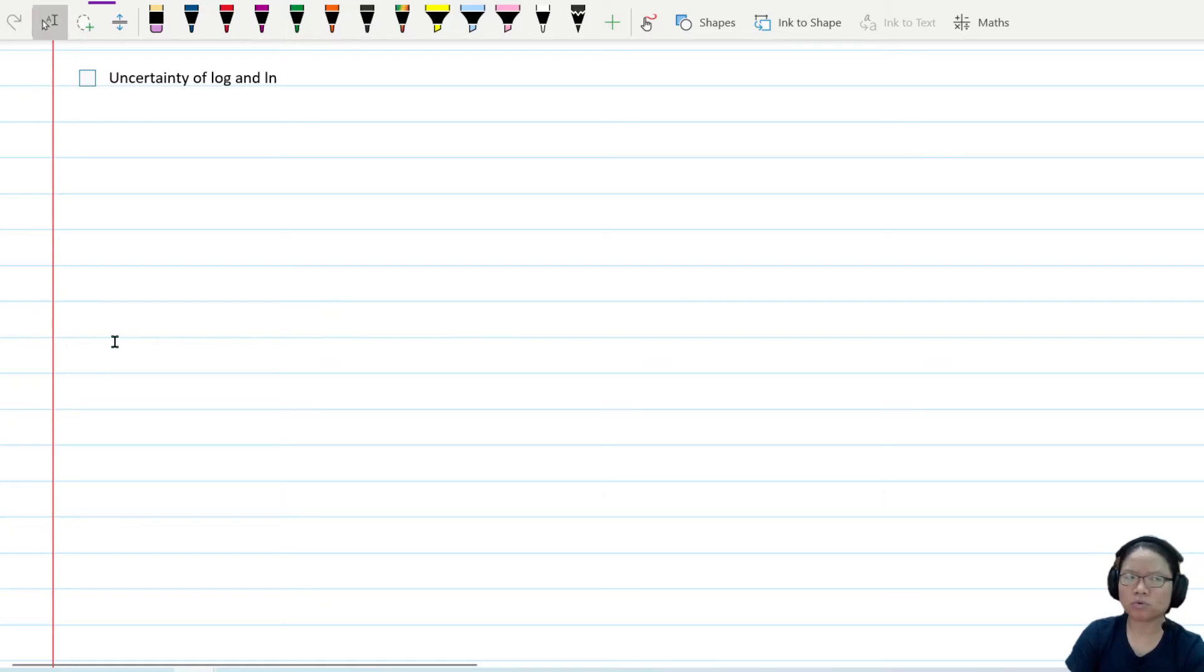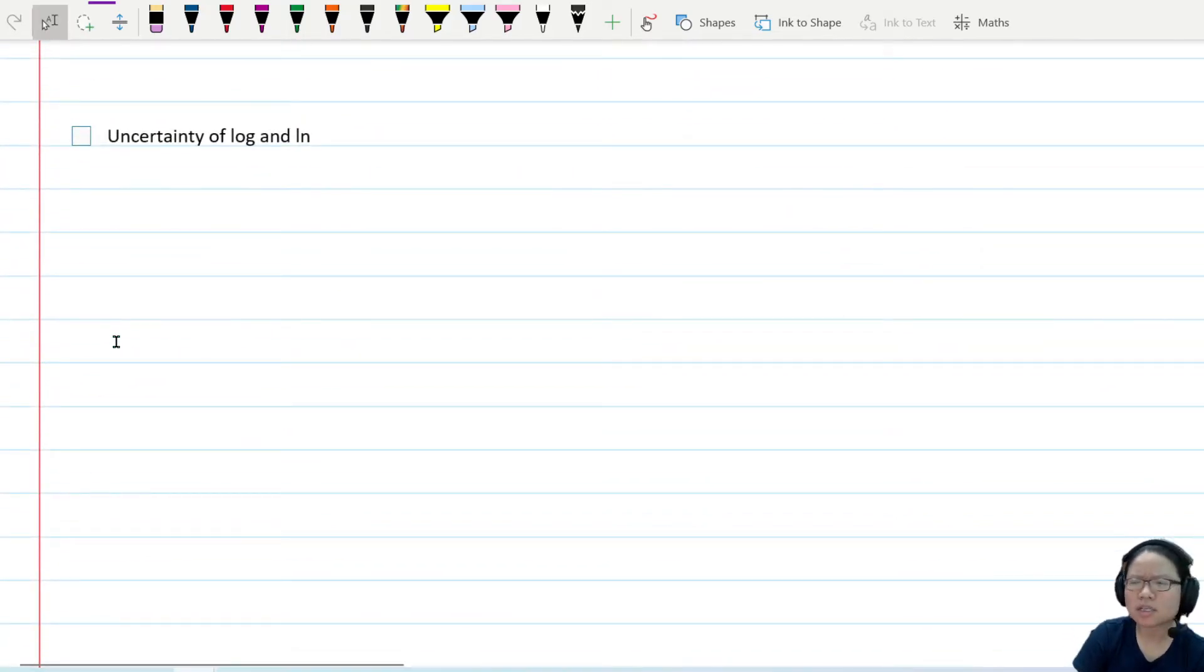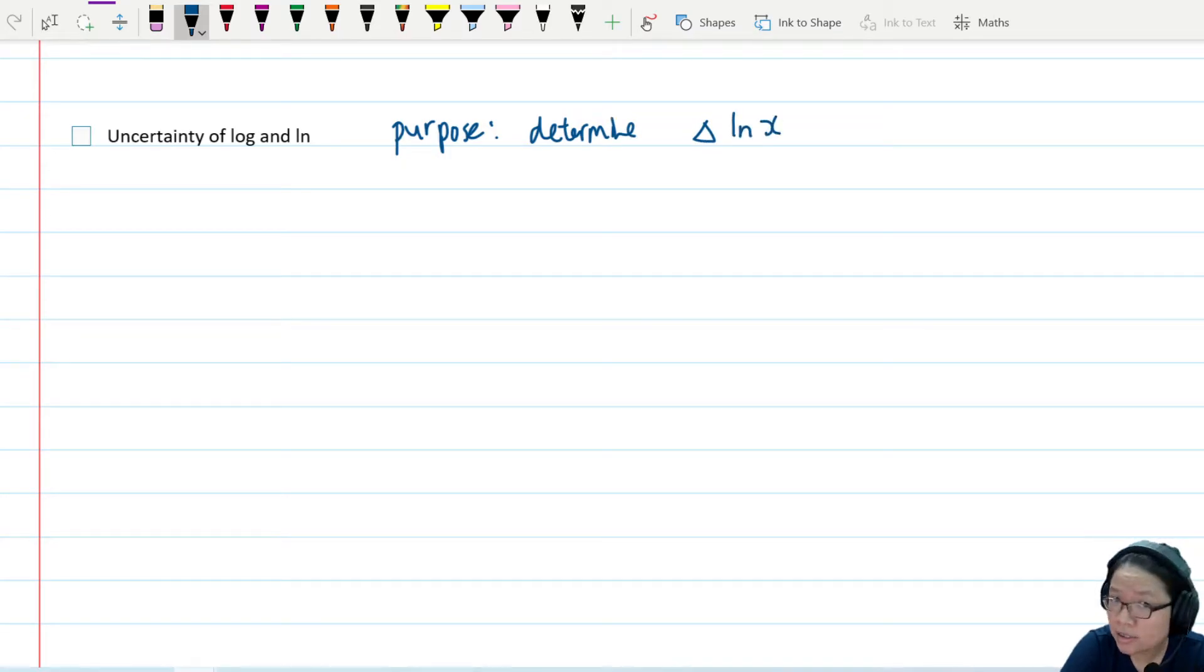So we know how to deal with log and ln, but uncertainty, how? Basically, I'm going to write down here, our purpose of this video: purpose is to determine the uncertainty for ln x or the uncertainty for log x, where x is whatever we measure - it can be r radius, it can be t period, it can be anything.